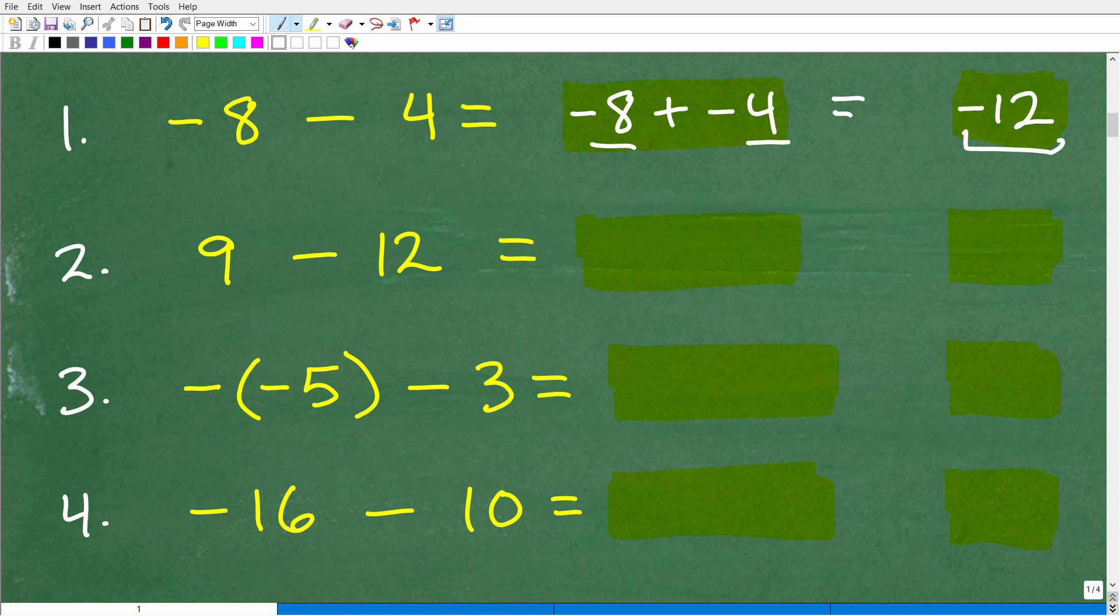But let me go ahead and do this real quick so we can wrap up this video. So, we have 9 minus 12, I'm going to change this to plus negative, 9 plus negative 12. So, what does this mean? I have 9 bucks, I owe someone $12. So, I give them all my $9, but I still owe them 3 more dollars. So, 9 plus negative 12 is negative 3, or 9 minus 12 is negative 3. So that is the answer.